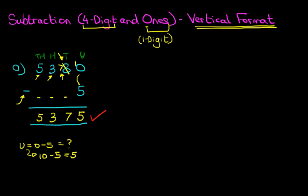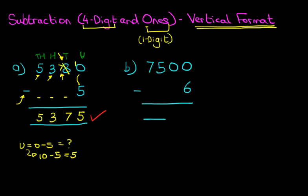That was nice and simple, wasn't it? Let's move on to our second example. This time we've got 7,500 minus 6. This one's a little bit more tricky. I'm going to label the columns again: units, tens, hundreds, and thousands.